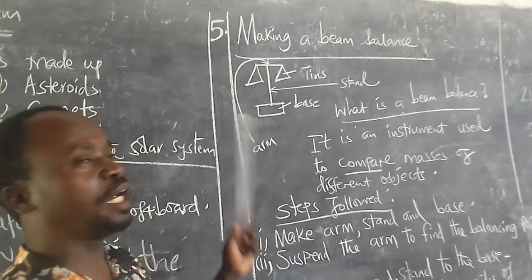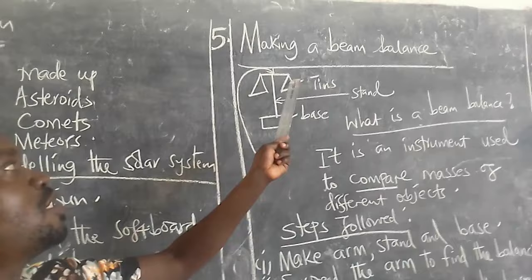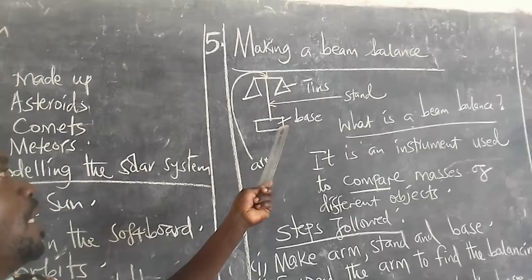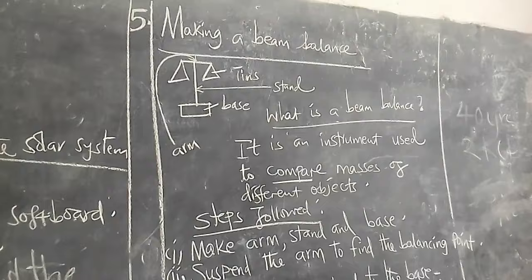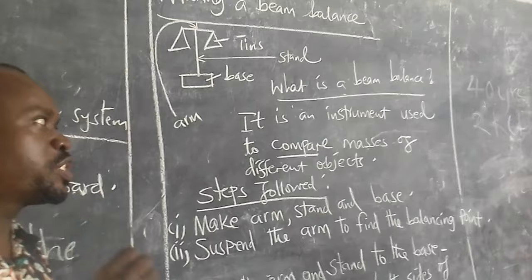And the last one: making or constructing a beam balance. Parts of a beam balance: we have the tins, the arm, the base, and the stand. A beam balance is an instrument used to compare masses of different objects.